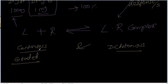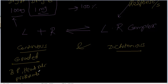Continuous response is also known as graded response — remember this term. We call it a graded or continuous response because we can measure the response. For example, blood pressure, heart rate, and prothrombin time — we can measure these and know whether they are high or low. These responses are continuous, so they are called graded responses.